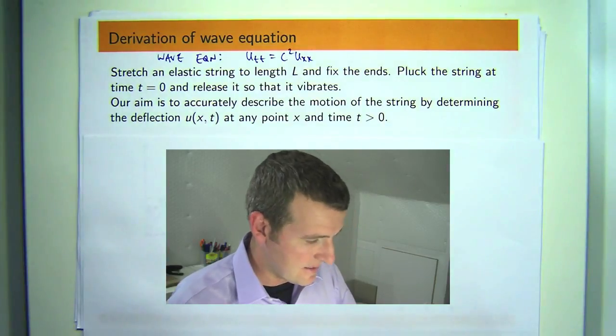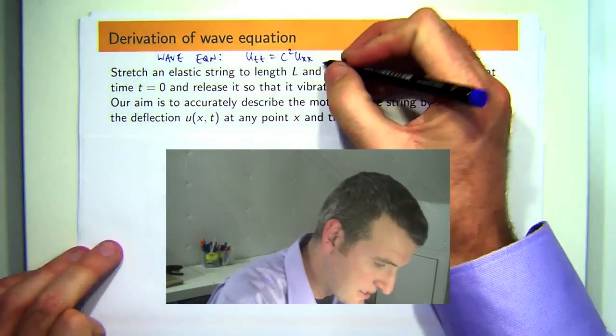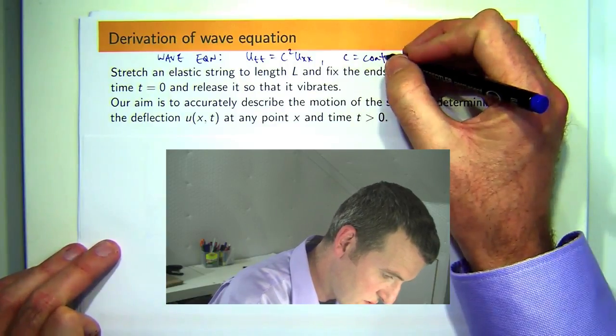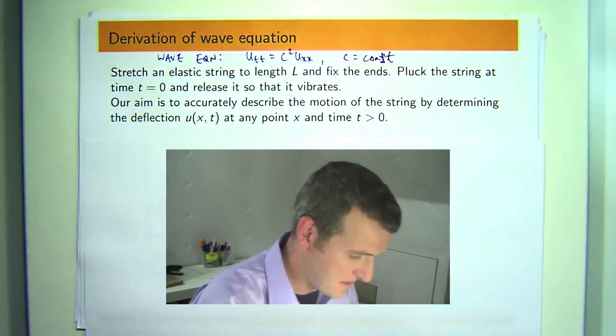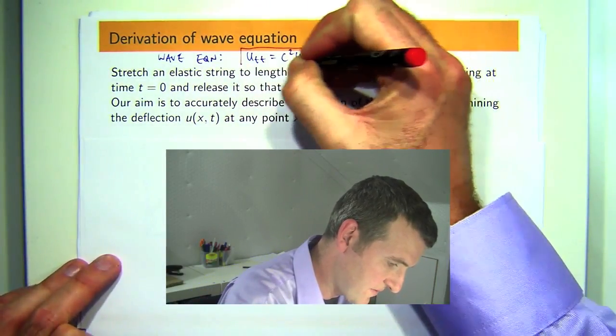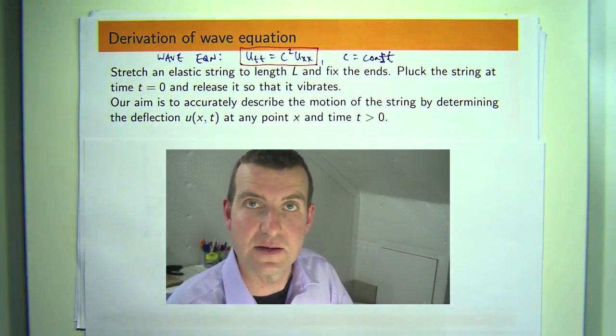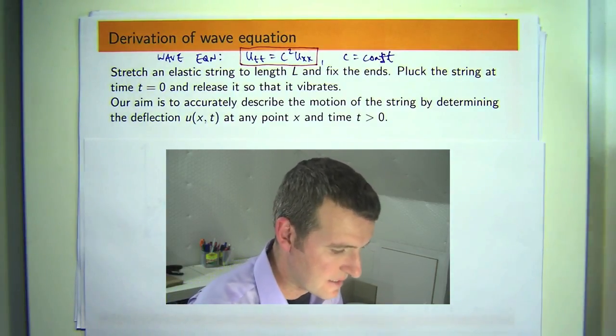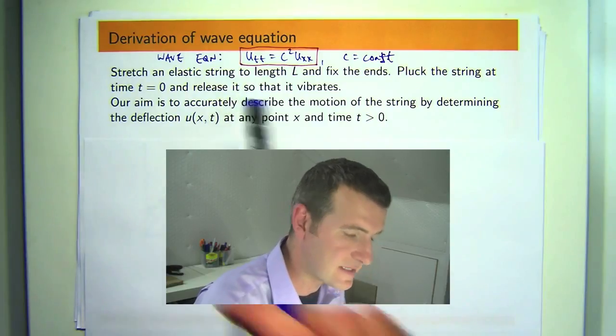Here C is a constant, and u is a function of position x and time t. Let's get on with the derivation.